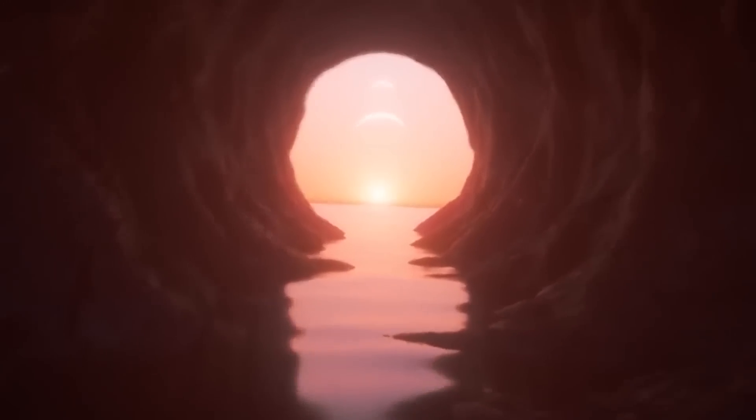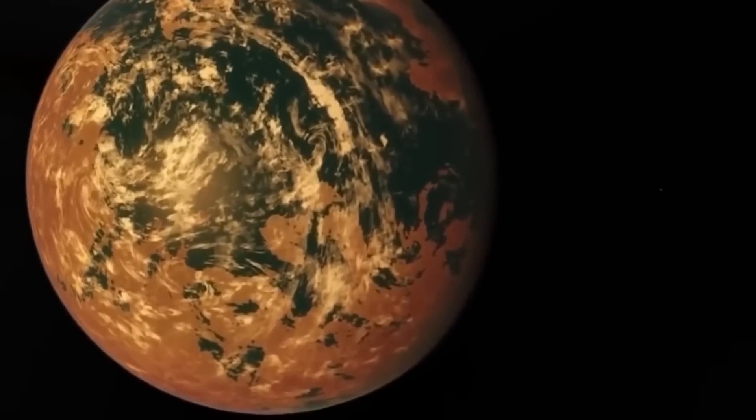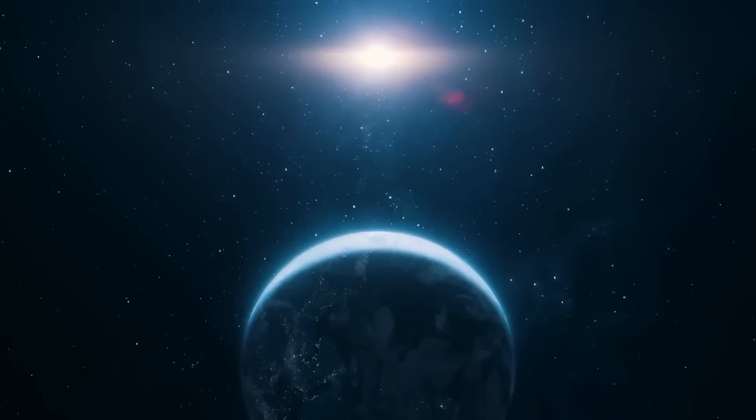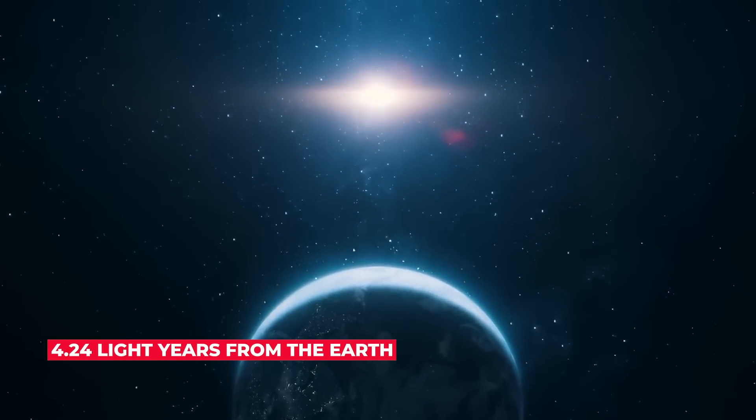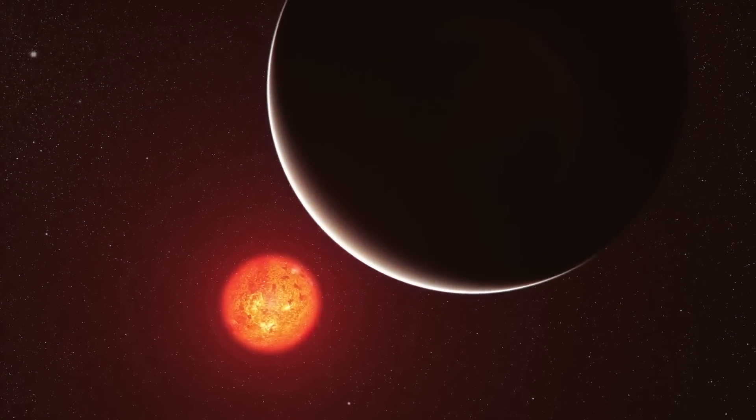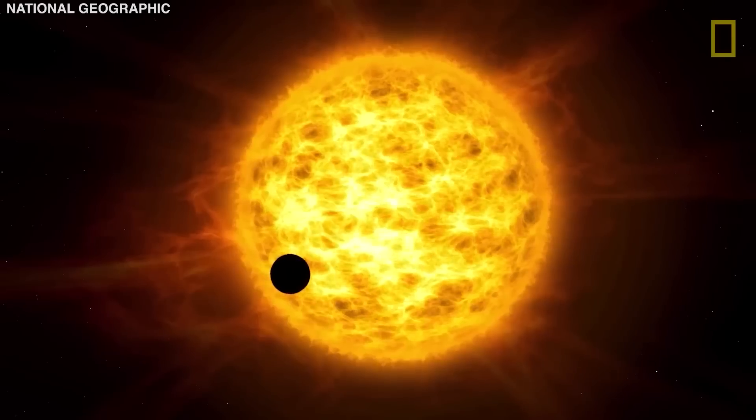According to scientists, Proxima b's habitable zone allows for the existence of liquid water on its surface. Proxima is presently 4.24 light-years away from Earth. Although it may appear distant from Earth, space is actually rather close.